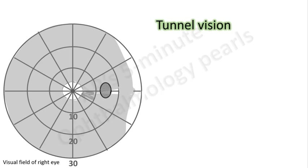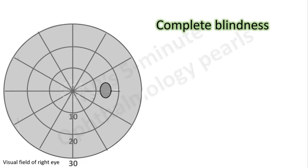With further progression the central island may further reduce in area till finally it is extinguished. A temporal island of vision may be present for a long time before finally it too is lost resulting in complete blindness.